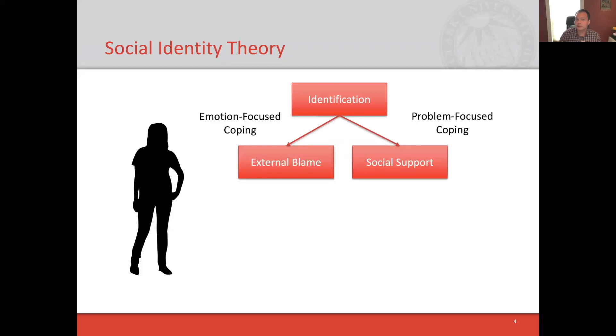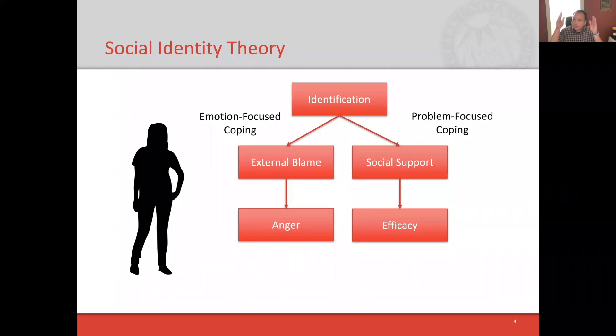In emotion-focused coping, the first thing I'm going to do is start to blame an external entity for my disadvantage. If I'm not blaming myself, I'm going to be blaming social structures, institutions, dominant group members. In problem-focused coping, I can look for social support from other people in my community. These two primary appraisals lead to experiences of anger. If somebody else is doing this to me as the source of my disadvantage, I'm going to experience a great deal of anger. And with social support, if a lot of people in my community support me, I'm going to feel more efficacy, the capability that I can do something about this disadvantage. It turns out that these two pathways lead to protest behavior. This combination of feeling intense anger and feeling like you can do something about it leads to protest behaviors.